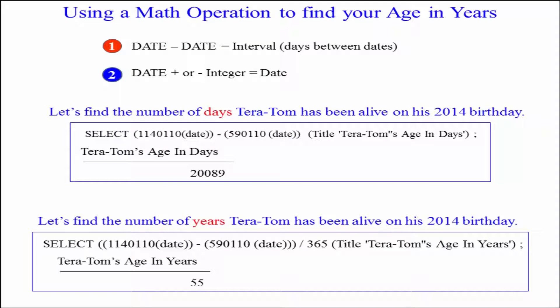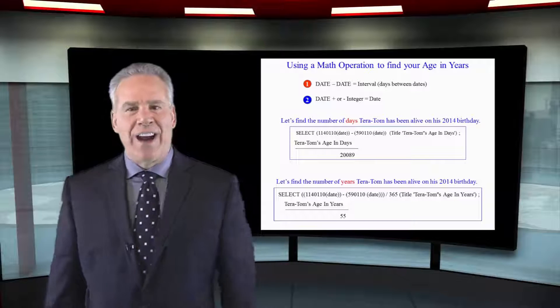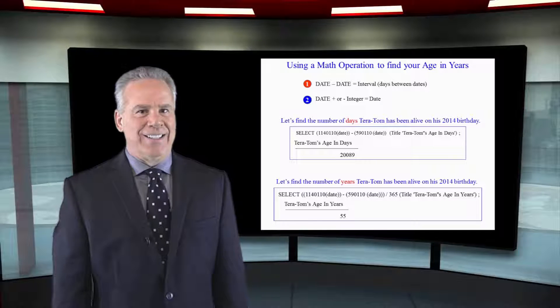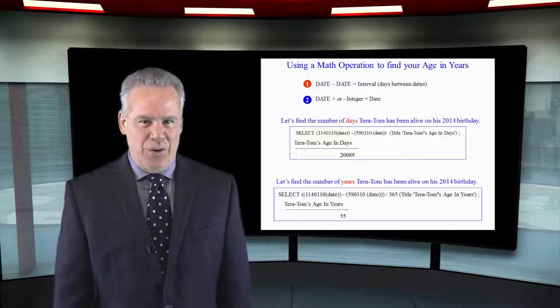Teradata's got some very clever ways to do partitioning using this type of formula. Stay with me here. I'm going to select 1140110, make sure they know it's a date, and I'm going to subtract 590110, the actual date of my birthday, and then I'm going to divide that by 365. That is going to give me 55, the number of years that I have been alive since January 10th 2014.